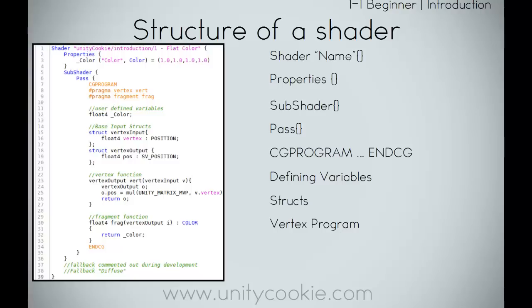The vertex program works on everything at a per-vertex level. For every vertex in our object it will run the vertex function. For the fragment program, it will run for every pixel — so things in the fragment program can really bog down our shader, but it is really cool. Then we have the fallback. The fallback is basically: if our shader doesn't work — if we're trying to run an Xbox shader on a PS3 — it will run the fallback because it doesn't know how to read that shader. The fallback means it won't come up bright pink on the wrong graphics card; it will just display as a flat diffuse or specular.